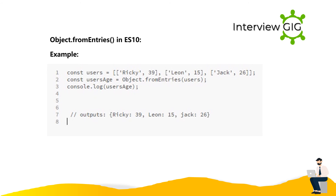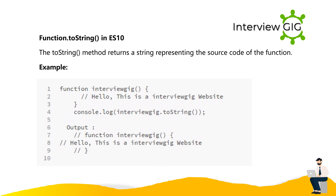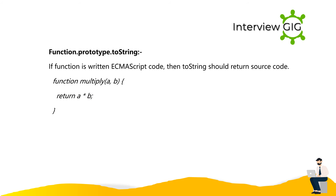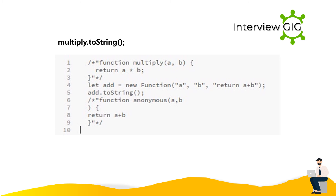Object.fromEntries in ES10: Example: const users = { ricky: 39, leon: 15, jack: 26 }. Function.prototype.toString in ES10: The toString method returns a string representing the source code of the function. Example: function interviewRig() { /* hello, this is our interviewRig website */ } console.log(interviewRig.toString()); Output: the full source code of the function, including function multiply(a, b) { return a * b; }.